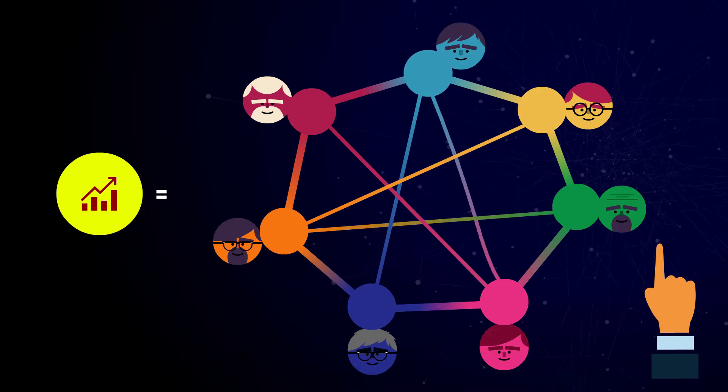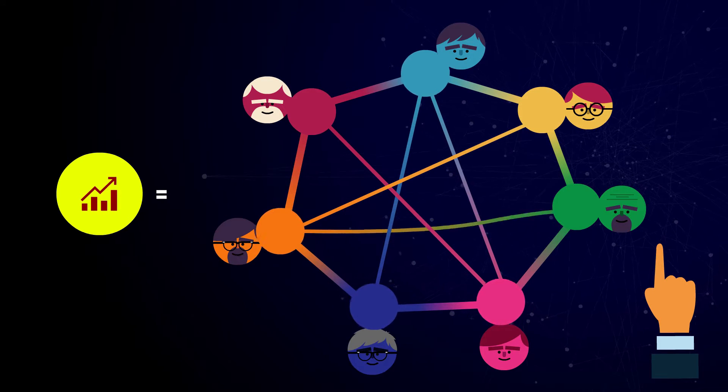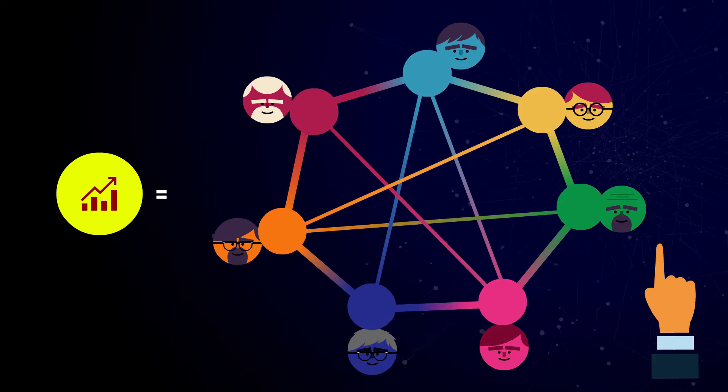An action that changes one variable could impact another variable in the chain, which might impact yet another variable and so on, eventually boomeranging back on the original action.